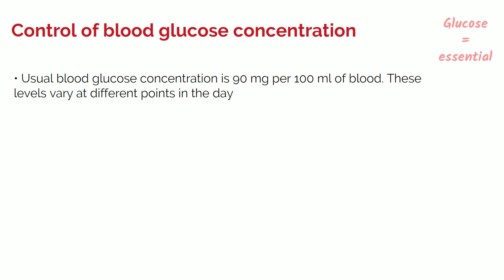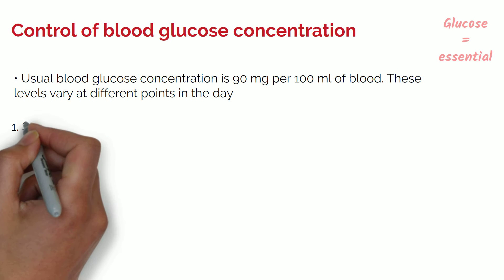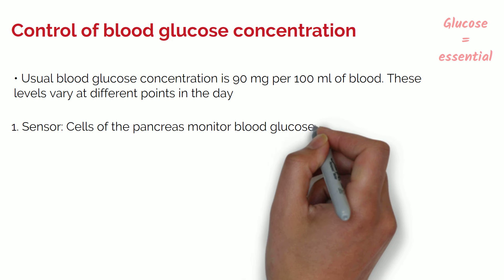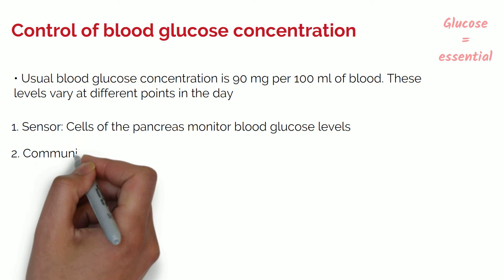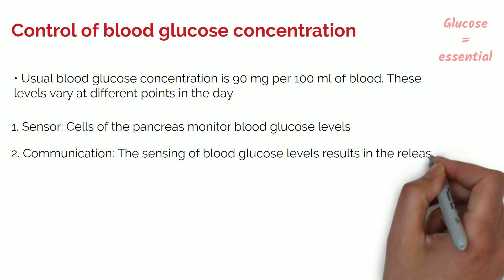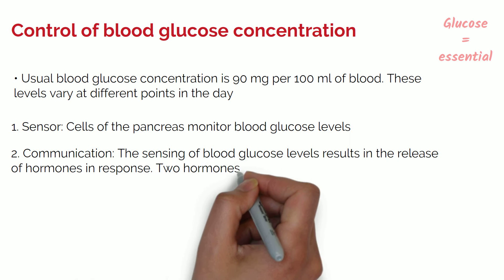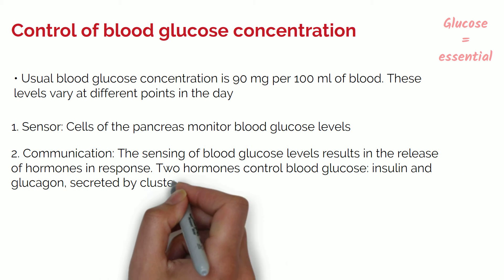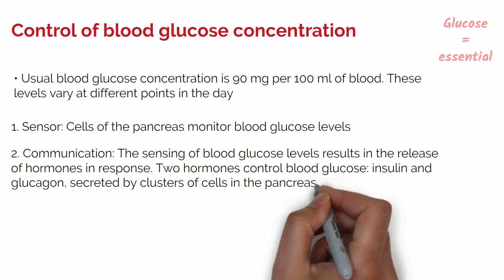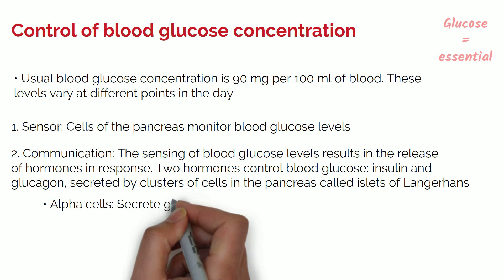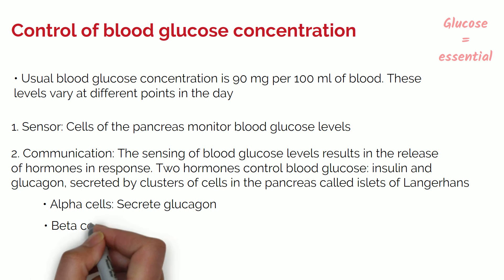Sticking to the overall model of control systems: one, the sensor — the cells of the pancreas monitor blood glucose levels. Two, communication — the sensing of blood glucose levels results in the release of hormones in response. Two hormones control blood glucose: insulin and glucagon. These hormones are secreted by clusters of cells in the pancreas called the islets of Langerhans. Alpha cells secrete glucagon and beta cells secrete insulin.